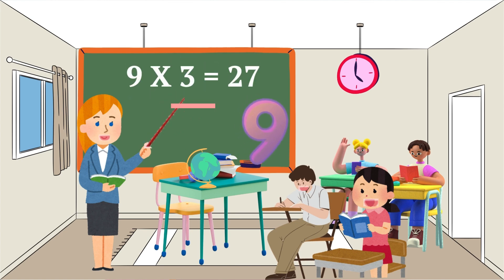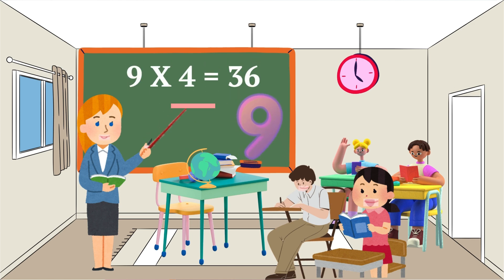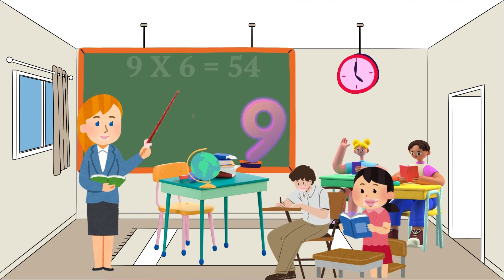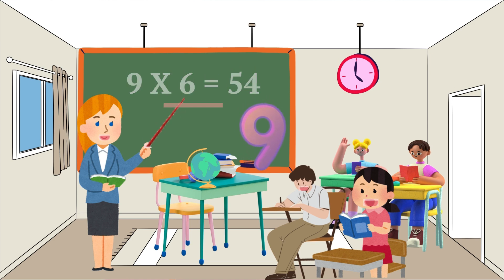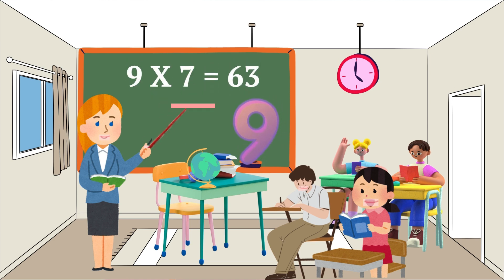9 fours are 36, 9 fives are 45, 9 sixes are 54, 9 sevens are 63.